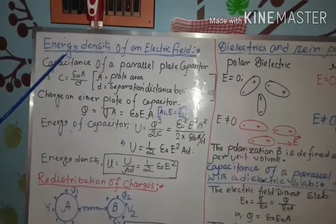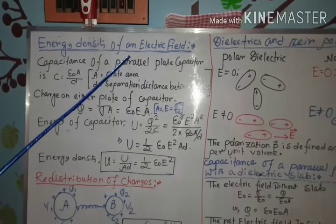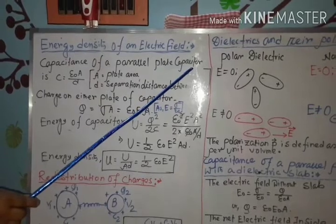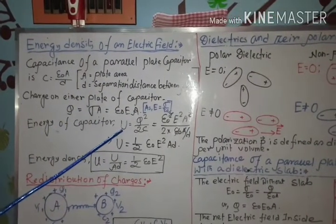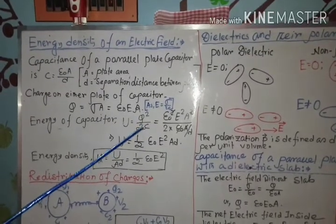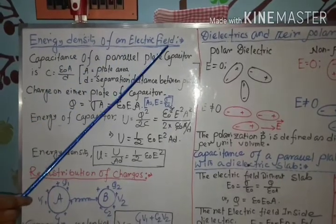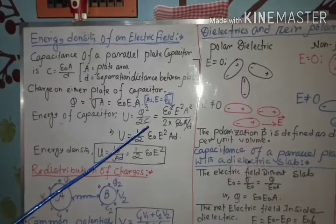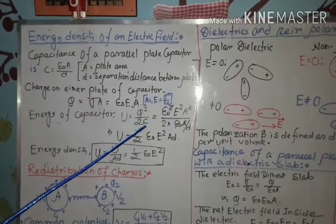To determine the expression for energy density, we take the reference of a parallel plate capacitor. We already know the expression for energy stored by the capacitor: U equal Q squared by 2C. So to determine the energy density of an electric field, we have to know the expression for Q and C in terms of the electric field.